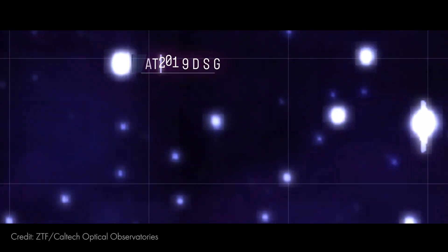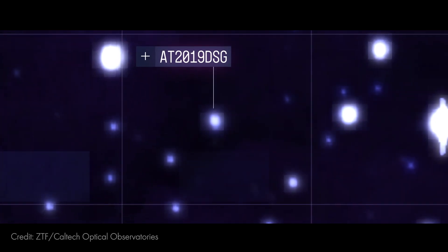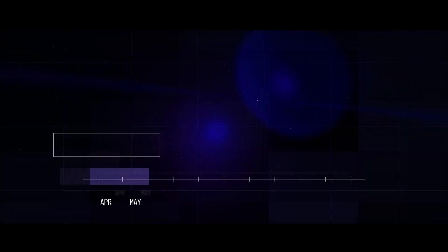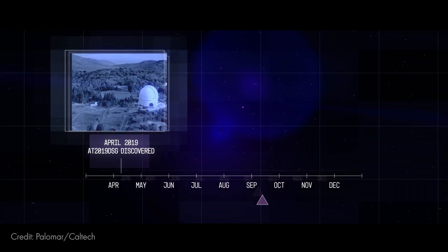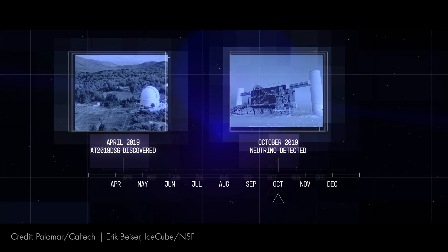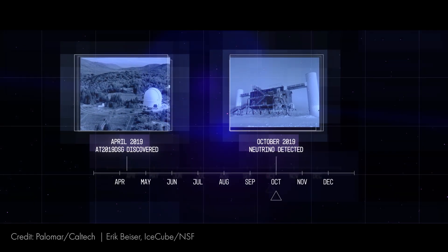However, a high-energy neutrino arriving from a tidal disruption called AT2019DSG offered new insights. An observatory called the Zwicky Transient Facility in California discovered the event in April 2019, but it wasn't until October that the IceCube Neutrino Observatory in Antarctica detected a high-energy neutrino astronomers linked to this event.